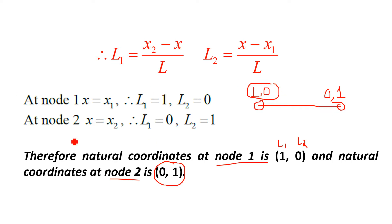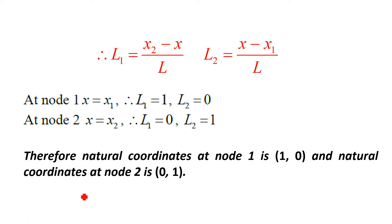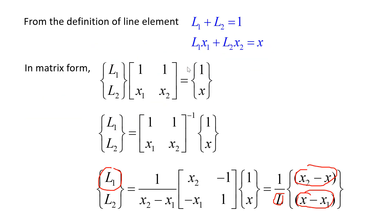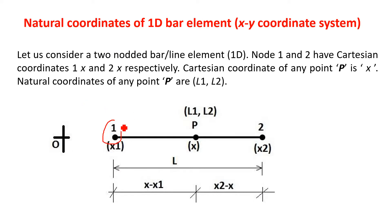These are the values of natural coordinates in the XY coordinate system, where x1 and x2 are the Cartesian coordinates of the nodes. When representing natural coordinates using L1, L2 notation, the total number of natural coordinates equals the total number of nodes. There is another way of representing natural coordinates using the xi-eta coordinate system, and in the next class we will derive the natural coordinates of the bar element using xi and eta. Thank you very much.